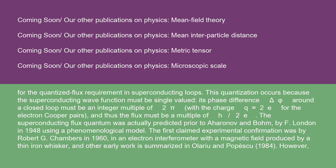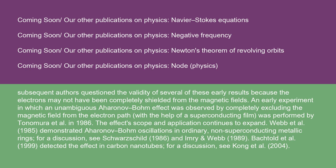The superconducting flux quantum was actually predicted prior to Aharonov and Bohm by F. London in 1948 using a phenomenological model. The first claimed experimental confirmation was by Robert G. Chambers in 1960, in an electron interferometer with a magnetic field produced by a thin iron whisker. Other early work is summarized in Olariu and Popescu (1984). However, subsequent authors questioned the validity of several of these early results because the electrons may not have been completely shielded from the magnetic fields. An early experiment in which an unambiguous Aharonov-Bohm effect was observed by completely excluding the magnetic field from the electron path with the help of a superconducting film was performed by Tonomura et al. in 1986.